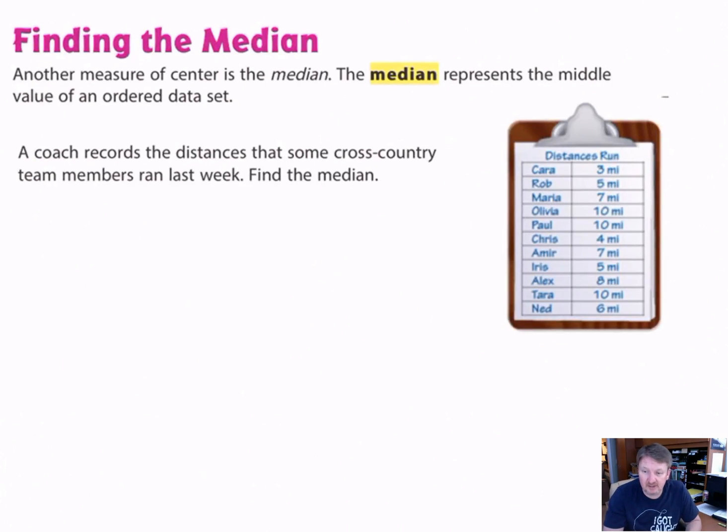Finding the median. Another measure of center is the median. The median represents the middle value of an ordered data set. Ordered is the keyword here—that means you put them in order. Let's look at a quick example.